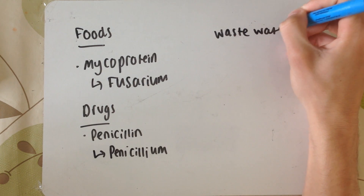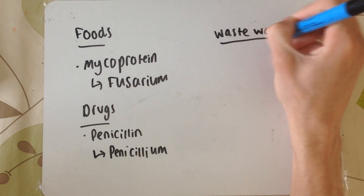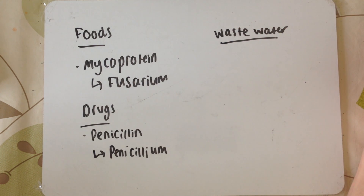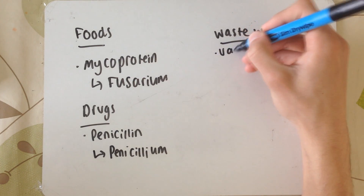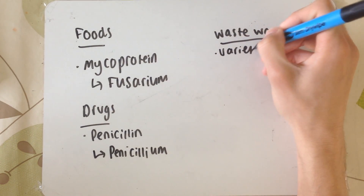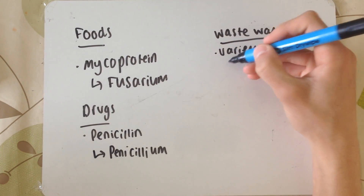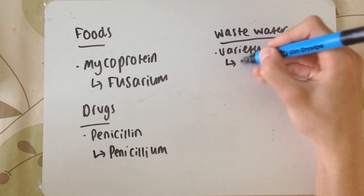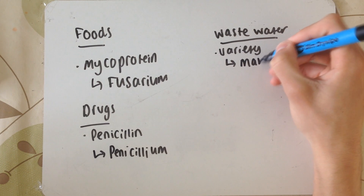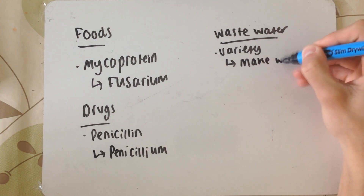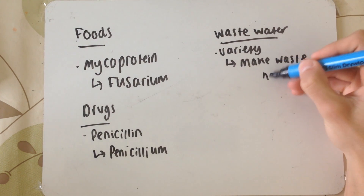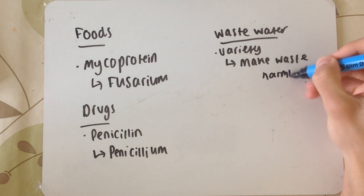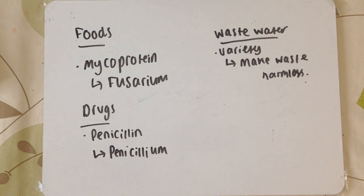Microorganisms can also be used for wastewater treatment. There's a variety of different bacteria, fungi, and other organisms involved. This essentially makes the waste water less harmful, and they can even produce by-products that are actually useful for us — basically turning harmful waste into something of value.